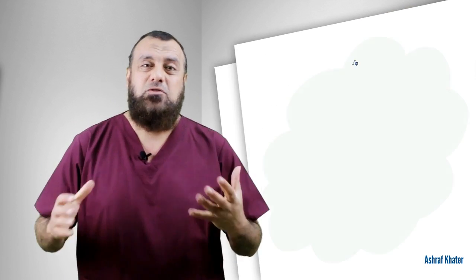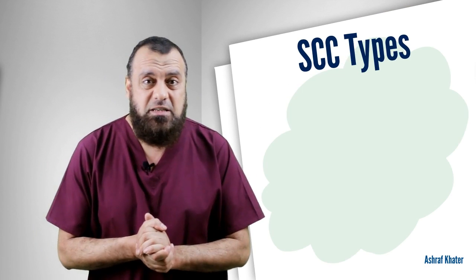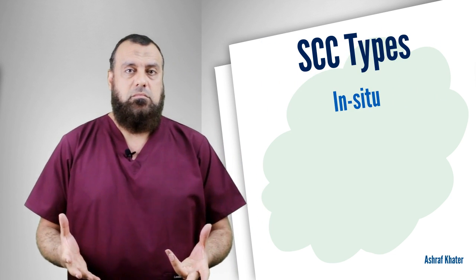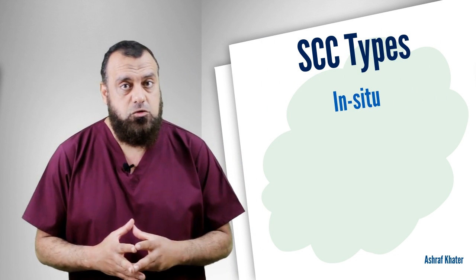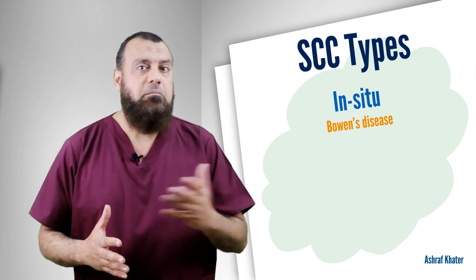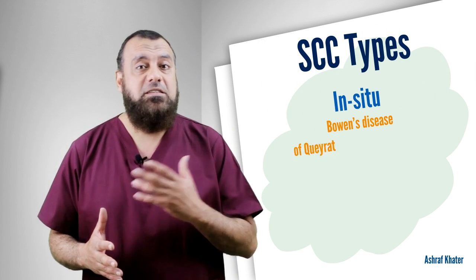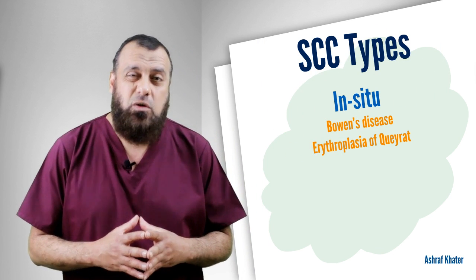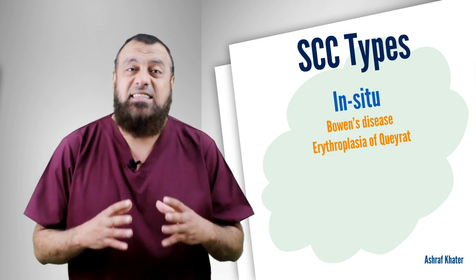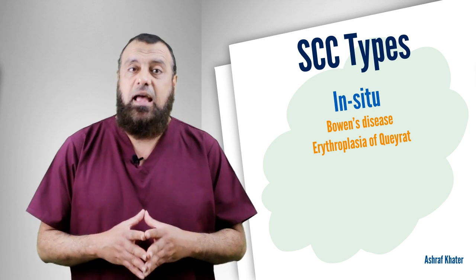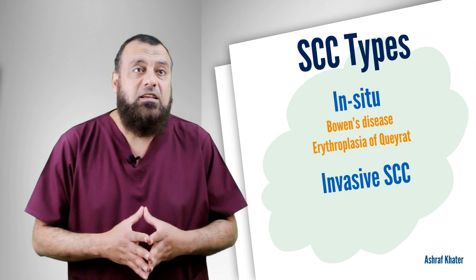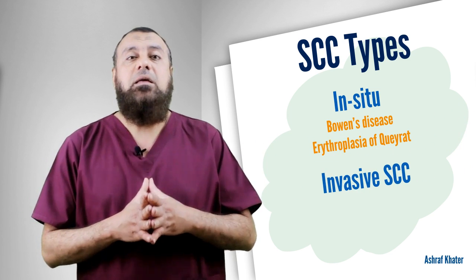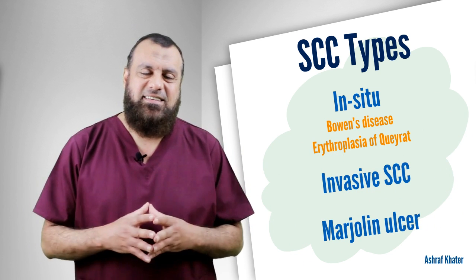What about the types of squamous cell carcinoma? It may be in-situ squamous cell carcinoma. It may be Bowen's disease. It may be erythroplasia of Queyrat in the genitalia. It may be invasive squamous cell carcinoma, and it may be what we call Marjolin's ulcer.